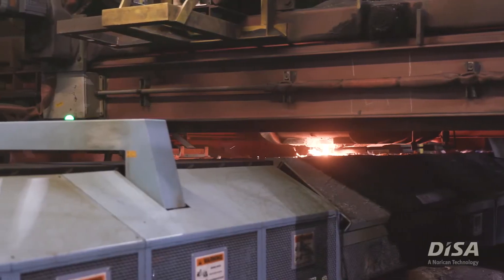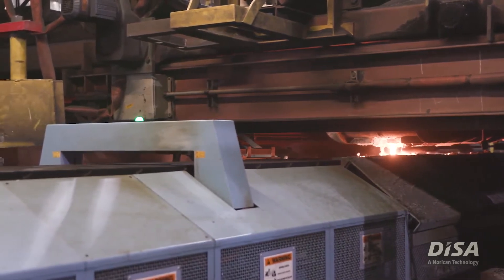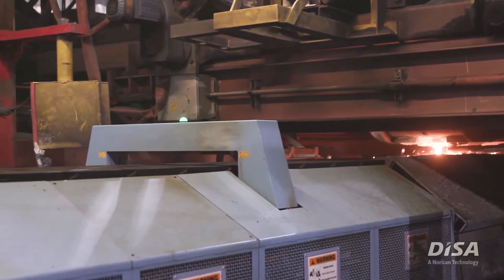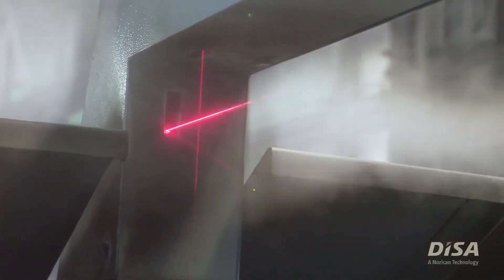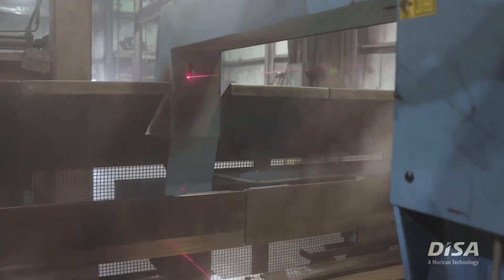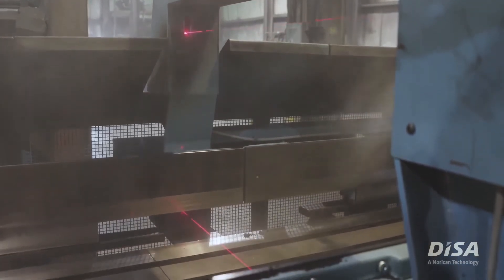The laser bracket is installed on the automatic mold conveyor. The bracket includes six high-resolution non-contact distance sensors that use laser technology. The mold string is pushed through this six-laser grid during mold transportation.